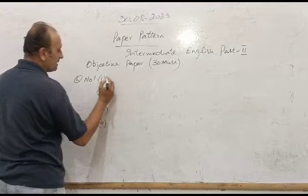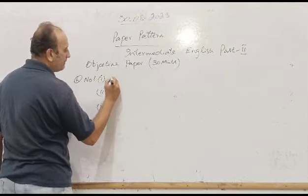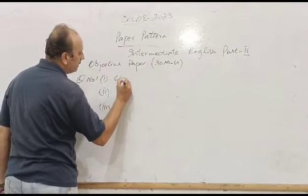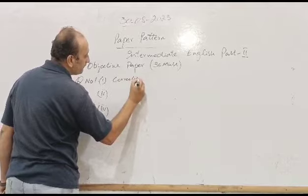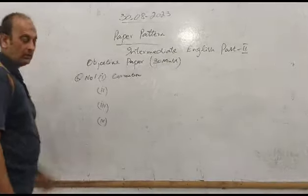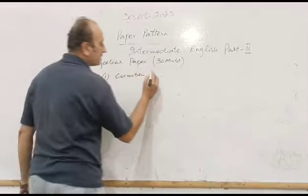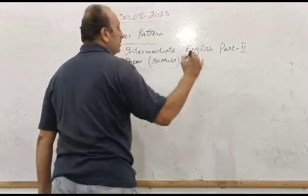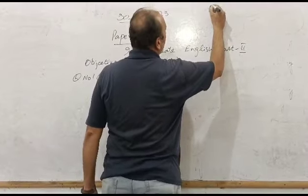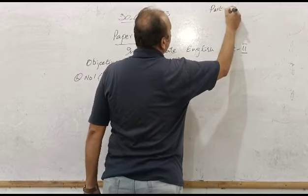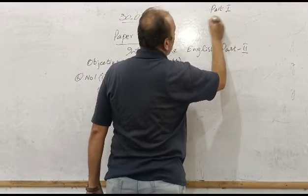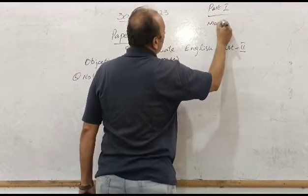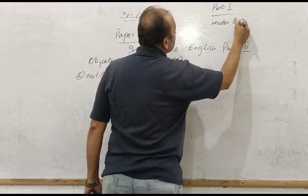First of all, your question number 1, option number 1 is based on your correction. And this correction is from your text. Your book has now 2 parts. Number 1, book 2, part 1, based on modern essays.